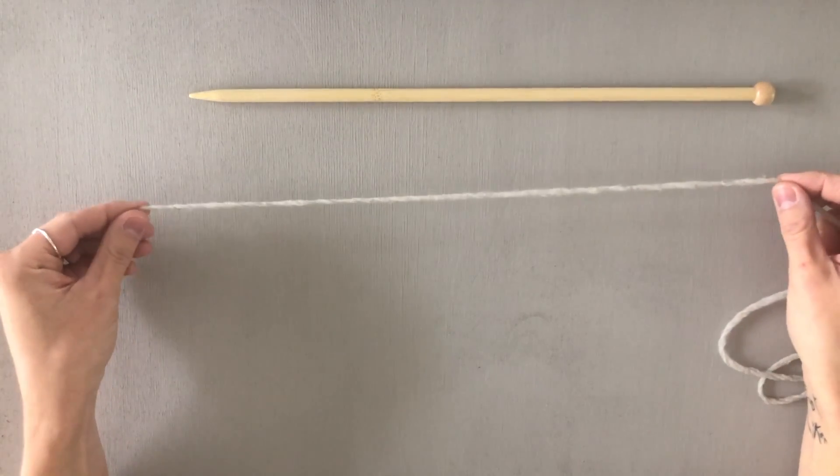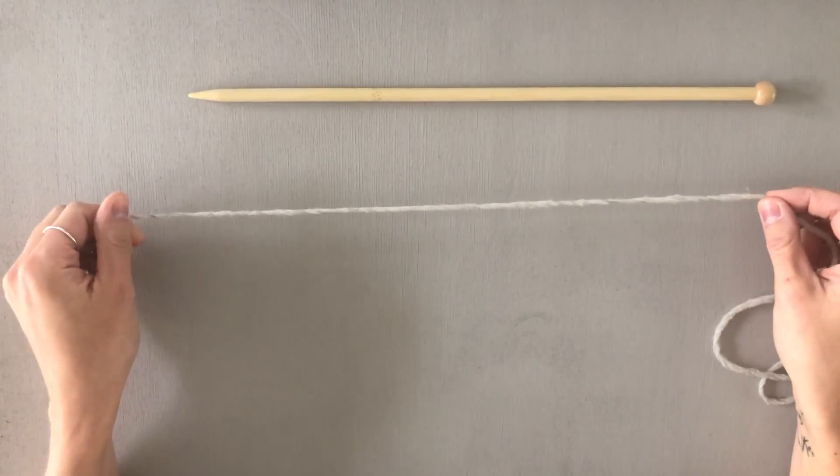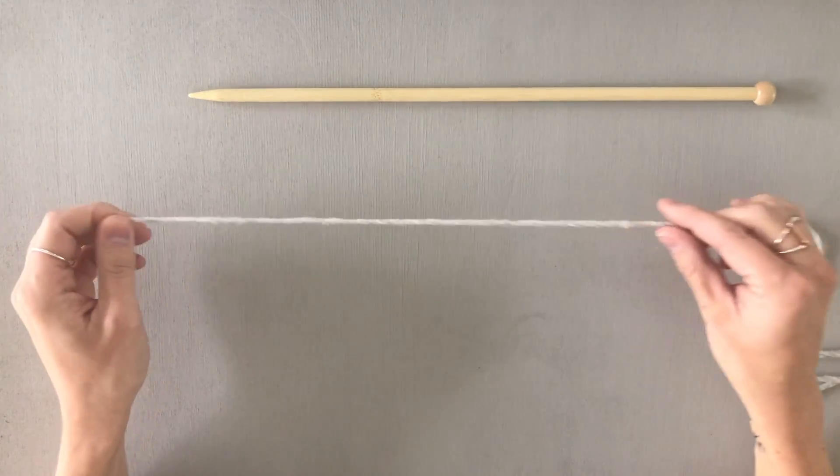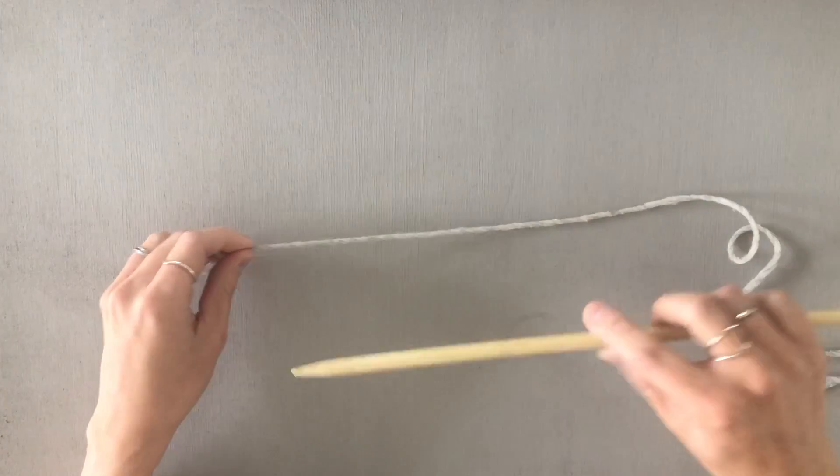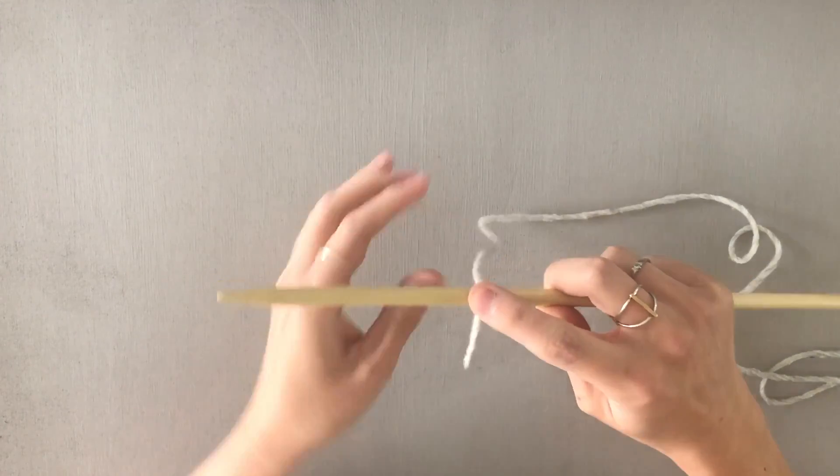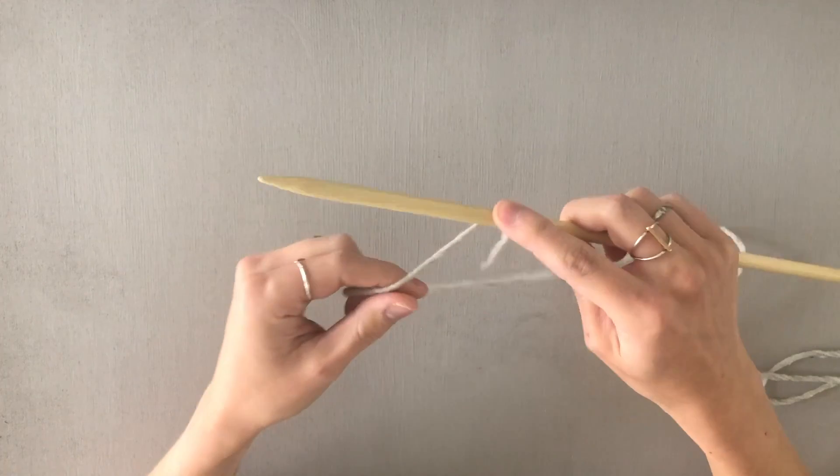The setup is the same as a regular long tail cast on and you'll first want to determine how long of a tail you need. I like to do that by wrapping my yarn around my needle for however many stitches I need to cast on.